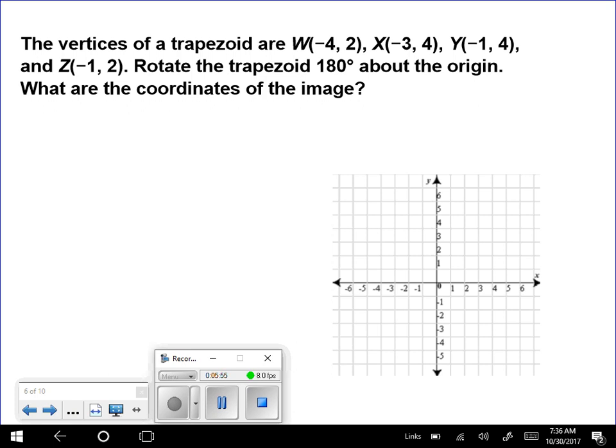You need to write all of these down. It says, the vertices of a trapezoid are listed, rotate the trapezoid 180 degrees about the origin. What are the coordinates of the image? So, we're going to first graph the original figure. So we got negative 4, 2 for W. I like to make sure that you write the labels with these because it makes your life a little bit easier down the road. So, this is X and Y and Z. Looks like this.